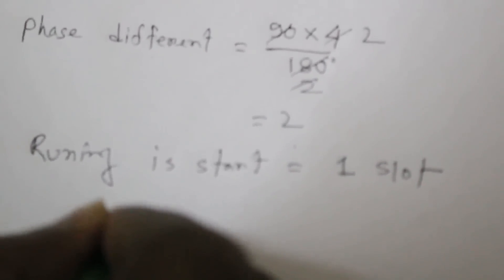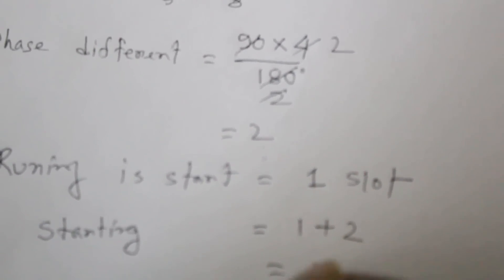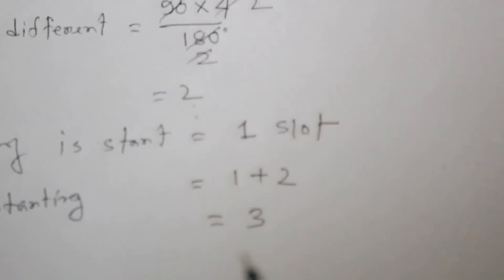So now we get phase difference is 2. That's mean if I start running well is running start 1 now solat, so starting may be start 1 plus this 2, so 3. So this is calculation.